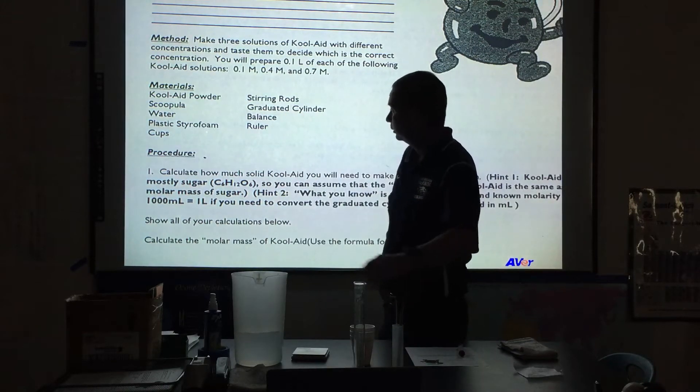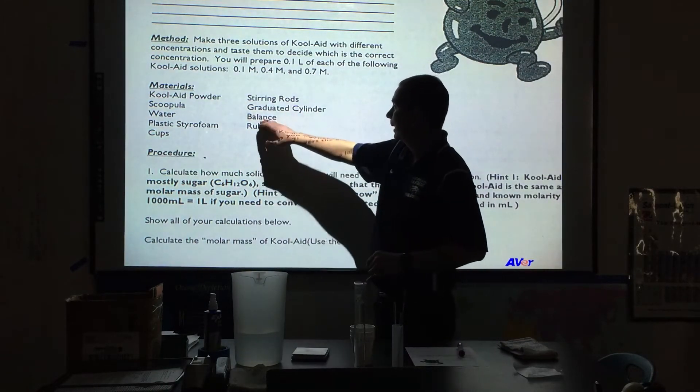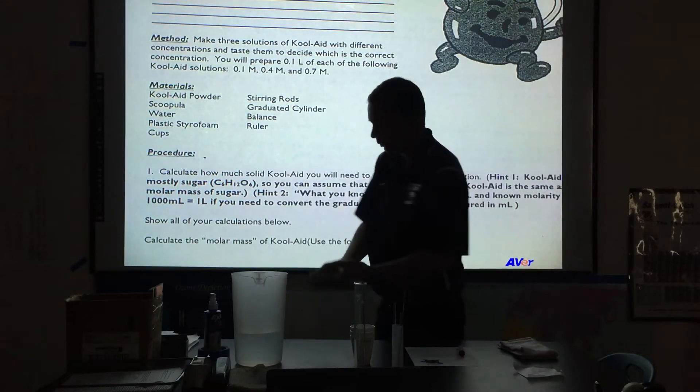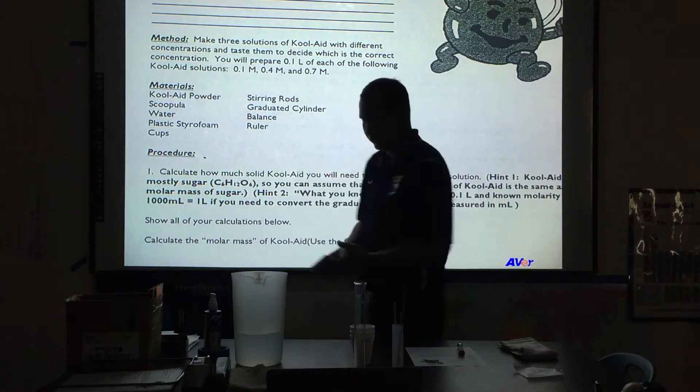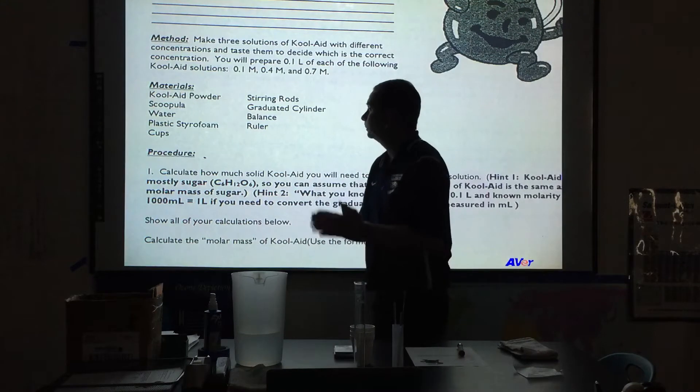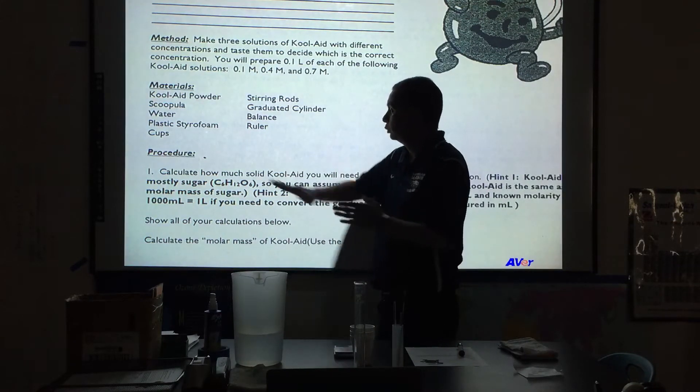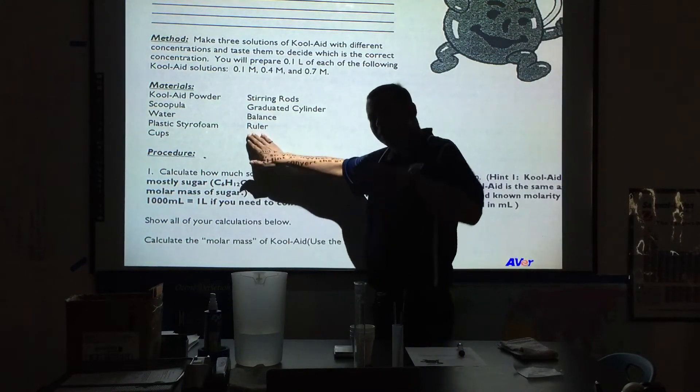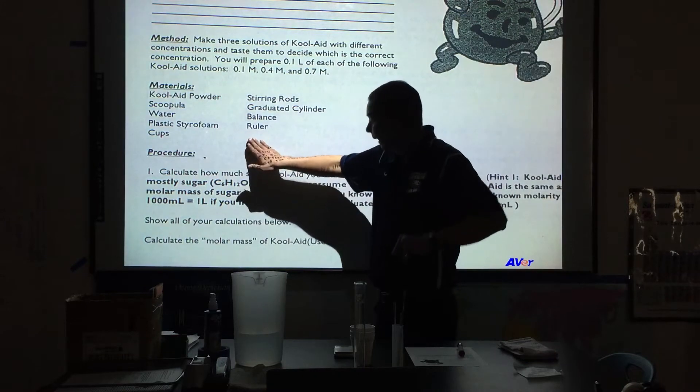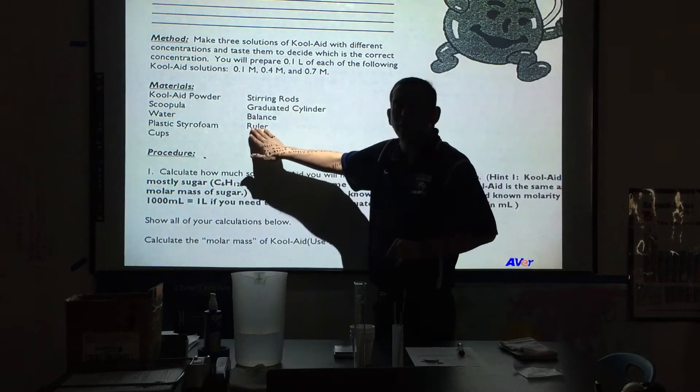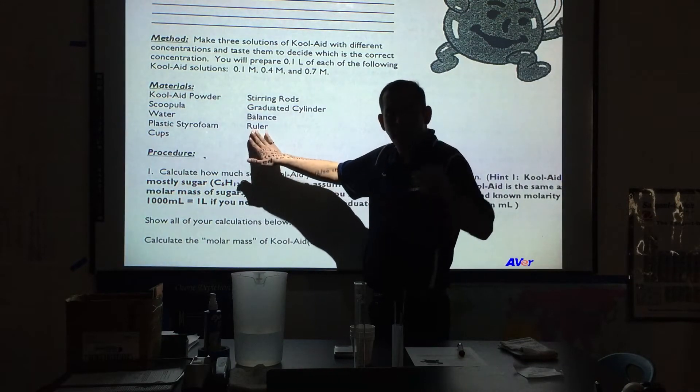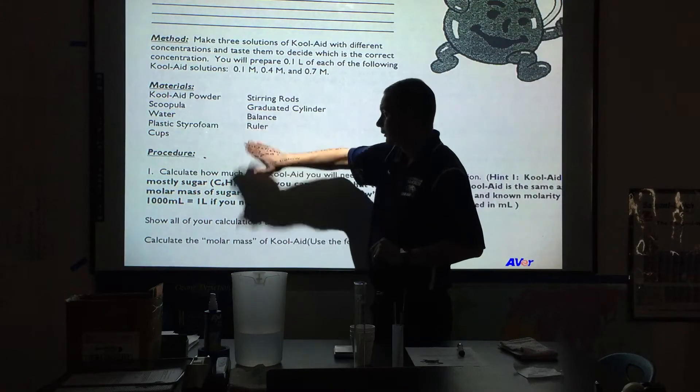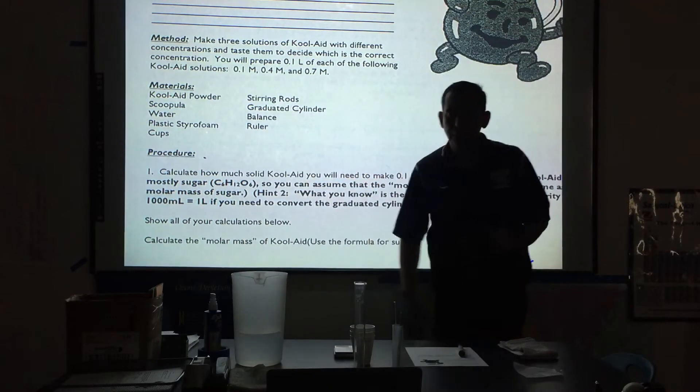Graduated cylinder, you've seen. We have a balance which we have used in the past, and I'll be showing you how to use those. A ruler for a certain procedure if things don't go right. We will use a ruler for our case, for what we're doing. I don't believe we're going to need it. So in this, you're going to go through the procedure.